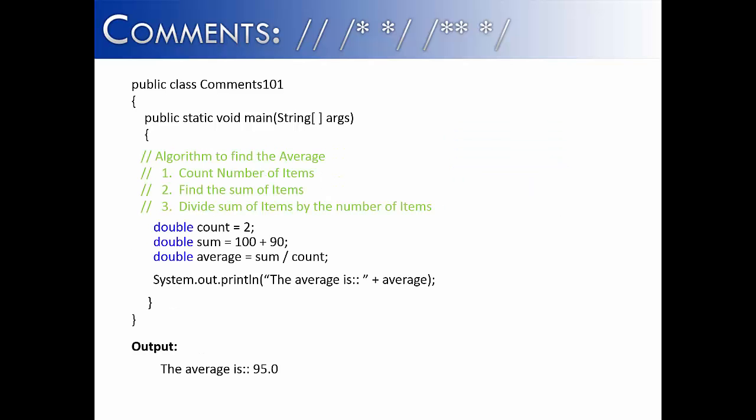In this example, I've written out an algorithm or a step-by-step guide to find the average of some numbers. So the first step would be to count the number of items, find the sum of items, and divide the sum of items by the number of items. And I've implemented that code beneath. But the point of this program isn't to show you how to average numbers. It's to show you that when you have multiple lines like this that you're leaving in comments, you can use the second type of comment which is a multi-line comment.